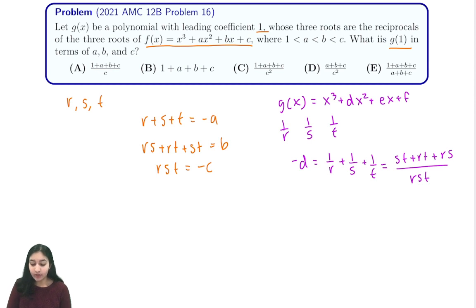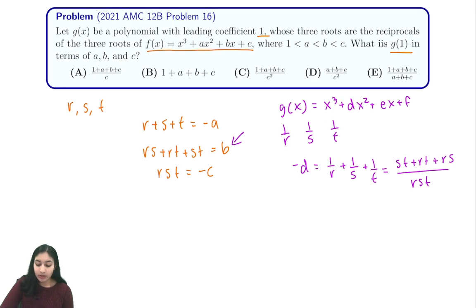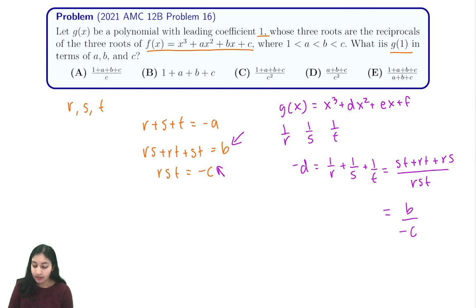We got that by multiplying st/st to the first expression, rt/rt to the second expression, and rs/rs to the third expression, and we got a common denominator of rst. From here we know that our numerator is equal to b and our denominator is equal to negative c, so this is just equal to b over negative c. That tells us that d equals b/c.